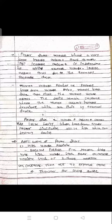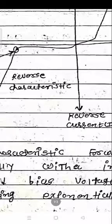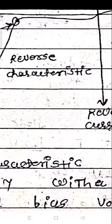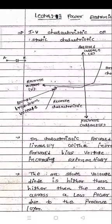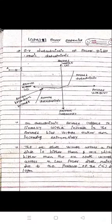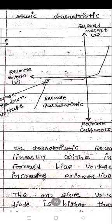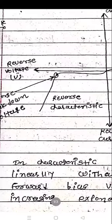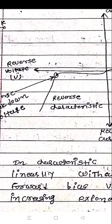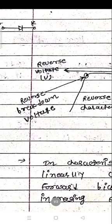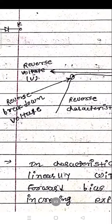In reverse bias, a very small leakage current flows through the diode. This leakage current is independent of the applied reverse voltage. So as we increase the reverse voltage, the reverse current stays almost constant — it does not change significantly. On the x-axis we can see different reverse voltages increasing, but the reverse current remains constant.